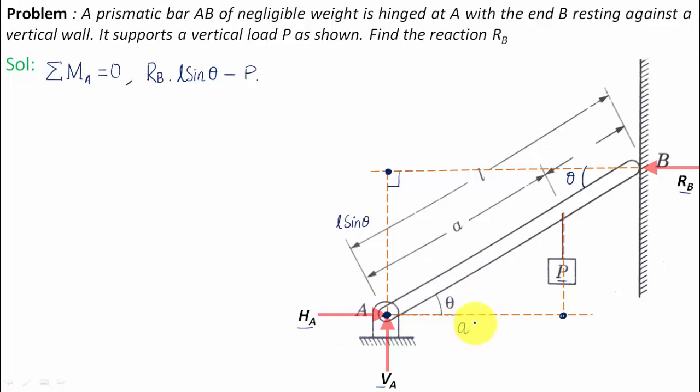And everything shall work out to be equal to zero. What you need is RB. So RB is going to be equal to P a cos θ over L sin θ, which is P a over L cot θ. That's it.